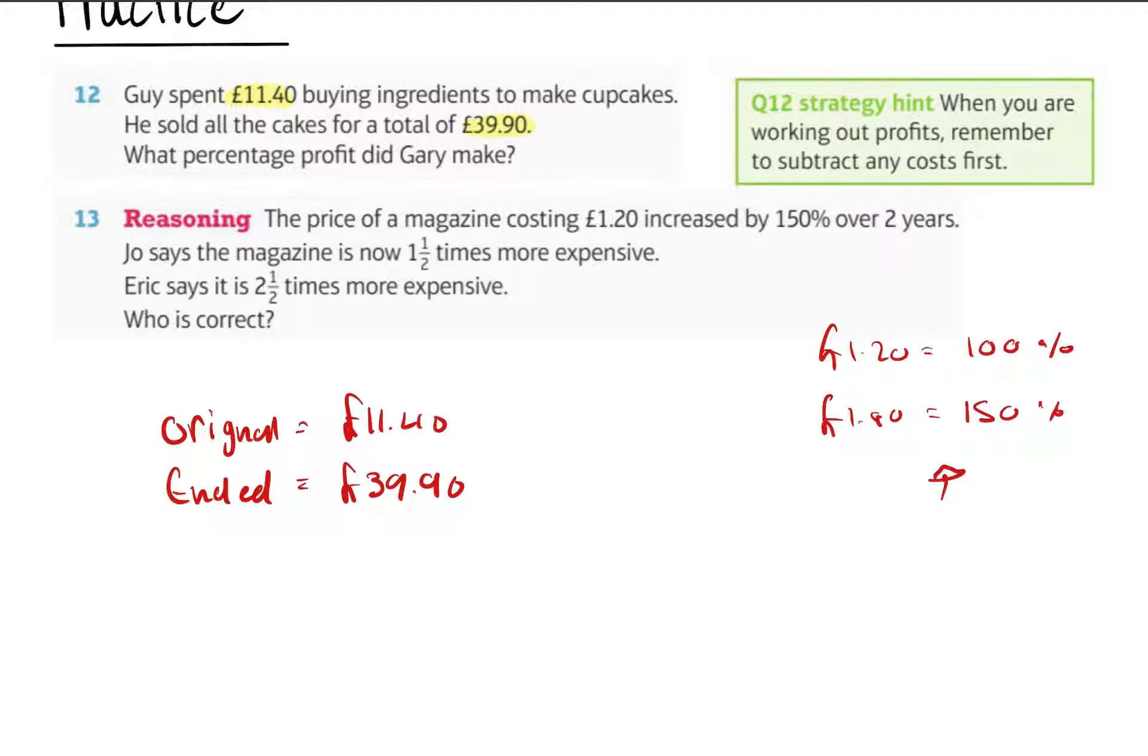...but it increases by that much, so £1.20 plus 150%. Joe says the magazine is now 1.5 times more expensive. Eric says it's 2.5 times. Who's correct? Tell me, give me a little sentence, who's correct.